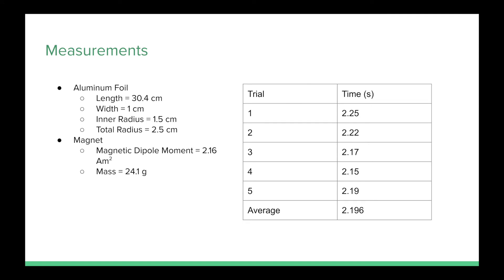The aluminum foil had a length of 30.4 cm, width of 1 cm, and a radius of 2.5 cm. The magnet had a magnetic dipole moment of 2.16 with a mass of 24.1 grams. The experimental times are shown in the chart on the right with an average time of 2.196 seconds.